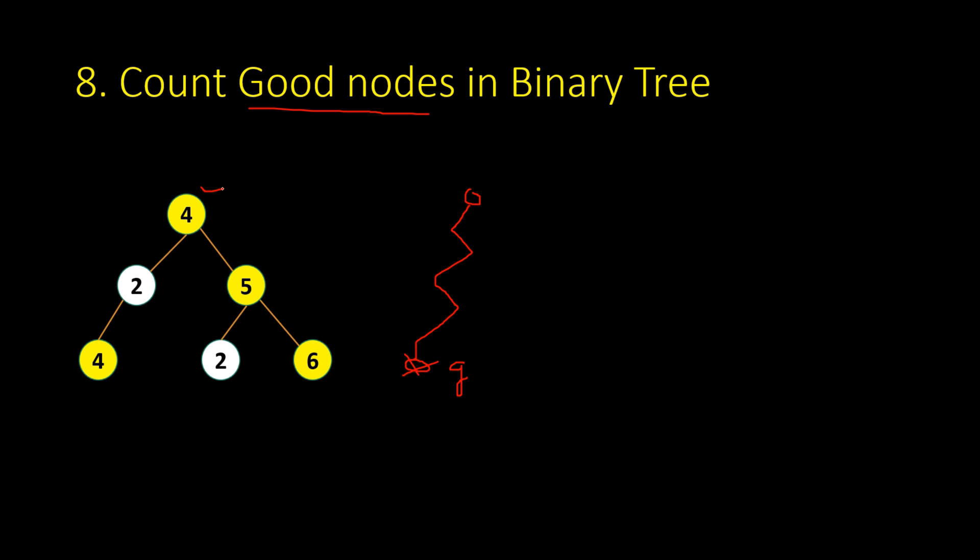You have to count the number of good nodes in a given binary tree. For example, in this case, is 4 a good node? Yes, because it's the root, so the path includes just this node. So the root will be a good node. Next, is 2 a good node? No, because you go from 4 to 2, and 4 is larger than 2, so 2 is not a good node. This 4 is a good node if you take this path.